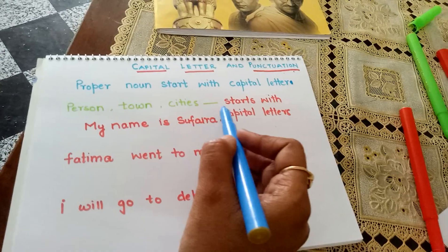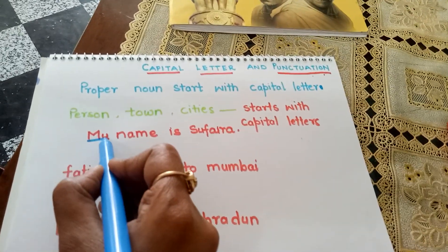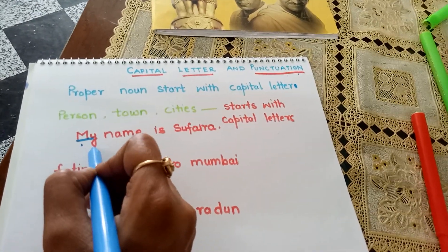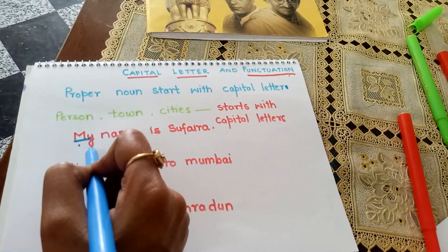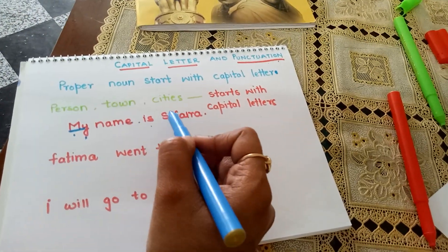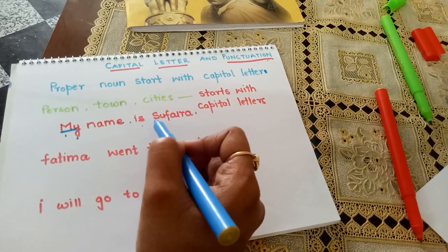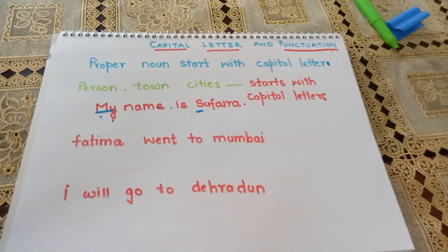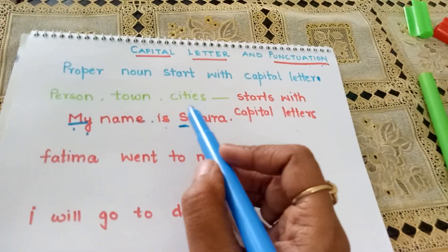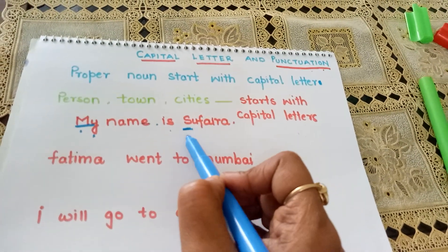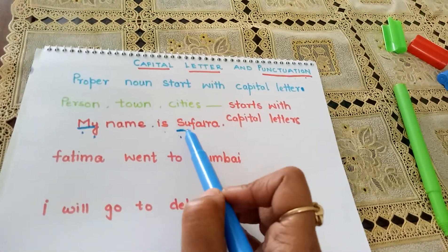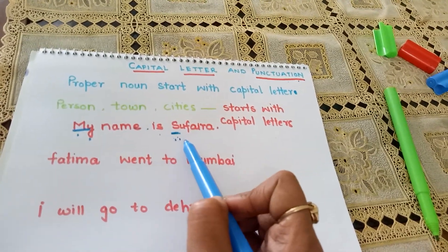I have written this sentence. I have started it with a capital. 'My' is with capital M followed by small letters. Then 'name' is small, and again 'my name' — that is a proper noun — starting with a capital letter. My name S is starting with a capital letter. Why is my name starting with a capital letter?